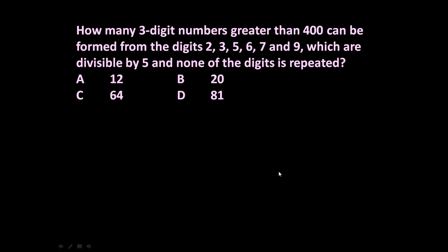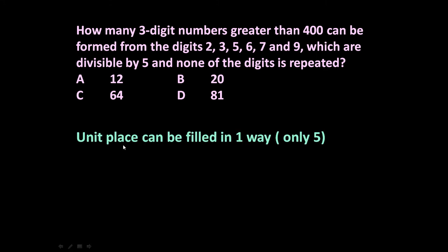First, let us determine the unit place. It can be filled in only one way because the number is divisible by 5, so the unit place can only be 5 out of these six digits. Only 5 can occupy this position, so the unit place can be filled in only one way.